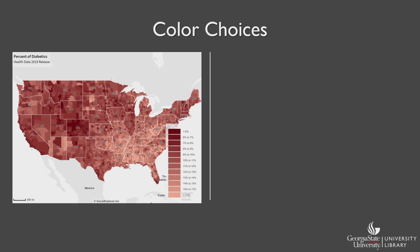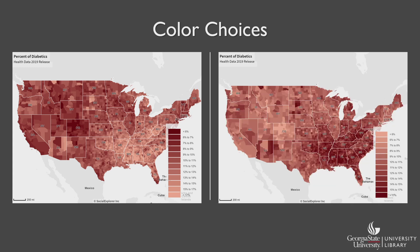However, when you look at the key closely, you can see that the lighter color is actually associated with a higher rate of diabetes. Since most folks don't look carefully at the key and would assume the color scale would indicate something different, it is easy for a map like this to lead to misinformation, even if the data that is being used is accurate. Here is what the map would look like if it followed a typical color convention.